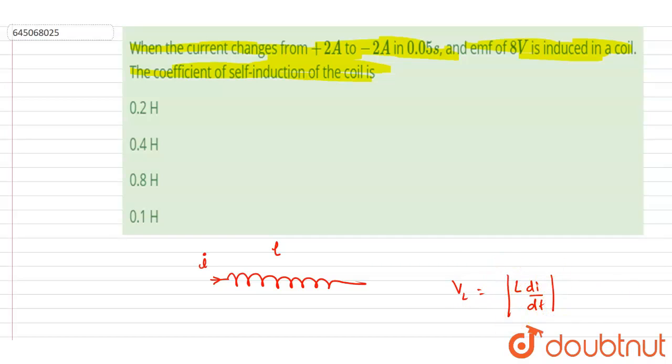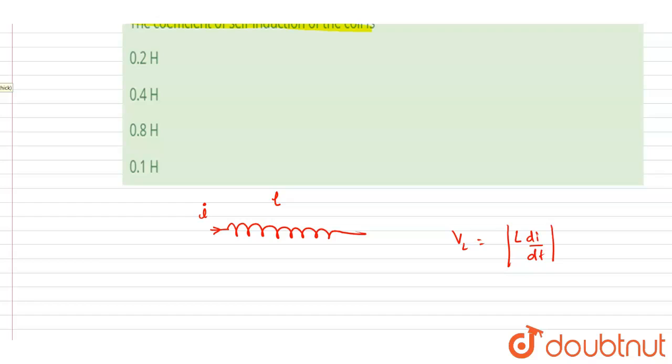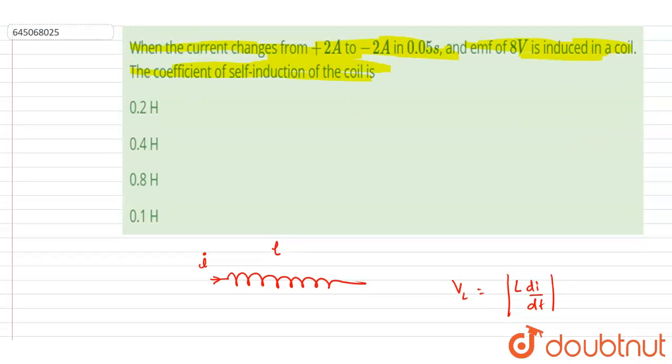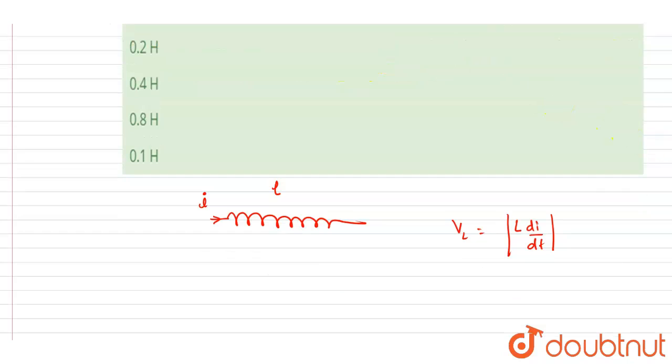So if you see here, the current changed from plus 2 ampere to minus 2 ampere, so the current is decreased. So if I write down the rate of change of current,